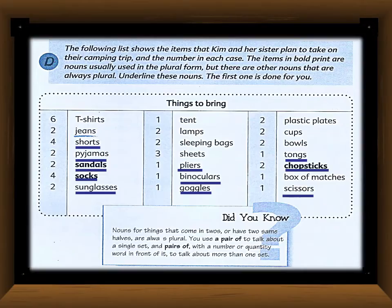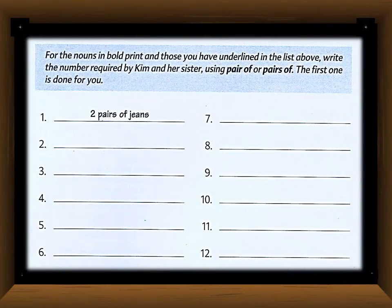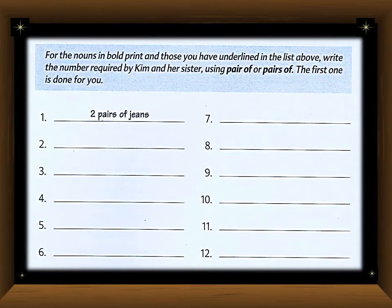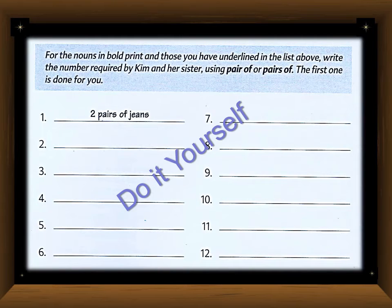Now we move to the next slide, which is an easy one. For the nouns in bold print that you underlined in the list above, write the numbers required by Kim and her sister. For example, opposite 'jeans' is written 'two,' meaning they need two pairs of jeans — 'pairs' is plural because two is more than one. If the number is one, use 'pair'; if more than one, use 'pairs.' You can do this exercise yourself following that rule.